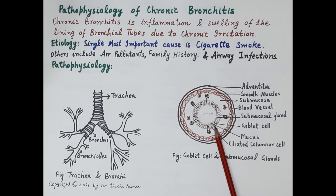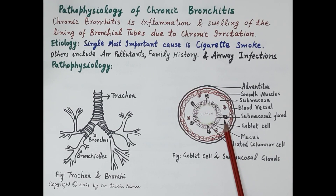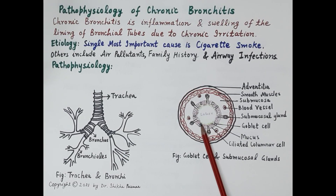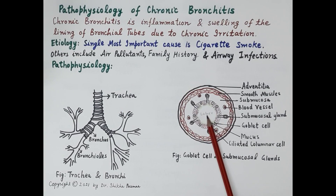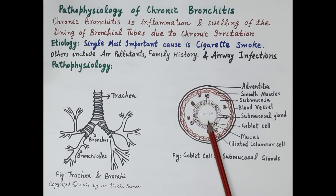The goblet cells produce mucus. Mucus is also produced by the submucosal glands, which are located in the submucosa below the mucosa. The cilia — hair-like structures on the columnar epithelial cells — propel mucus from the lumen of the respiratory tract towards the mouth, and are thus responsible for clearing the lumen of the bronchi.